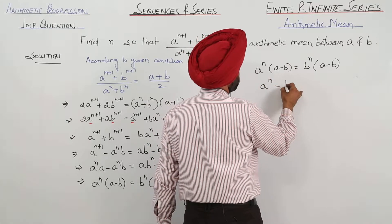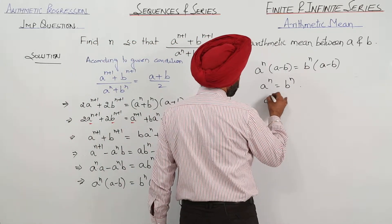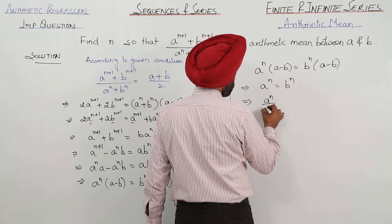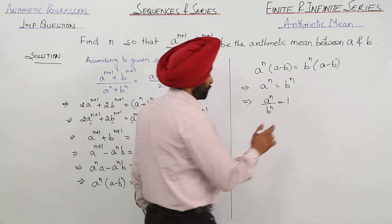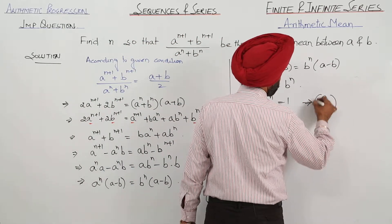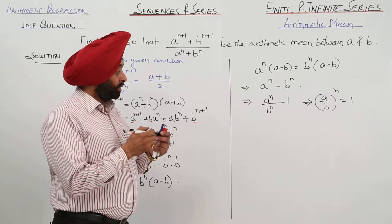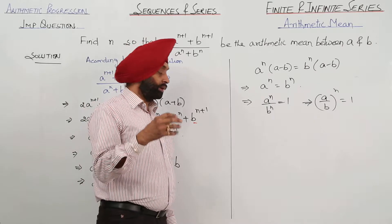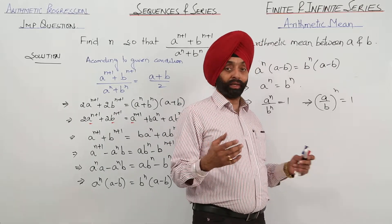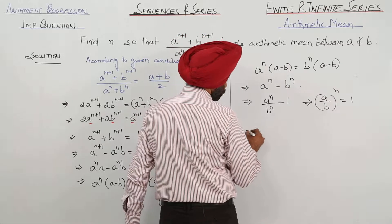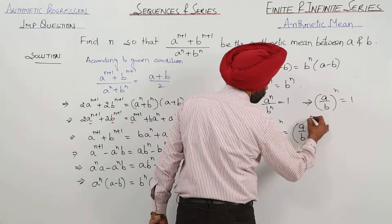Now, canceling a minus b from both sides, this becomes a raised to power n equals b raised to power n. We can write this as a upon b, whole raised to power n, equals 1. To find the power n, we write the right-hand side as a upon b whole raised to power 0, because anything raised to power 0 is 1. So, a upon b raised to power 0 equals 1 — this is the key logic here.